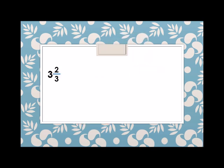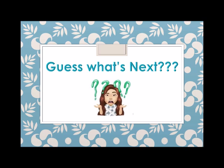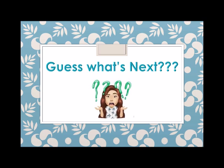Next we have two and two thirds plus four and three fourths. What do you notice? We have unlike terms — different denominators. So we cannot simply add the numerators. We first have to find the common denominator. I will teach you how to solve that problem in my next video.